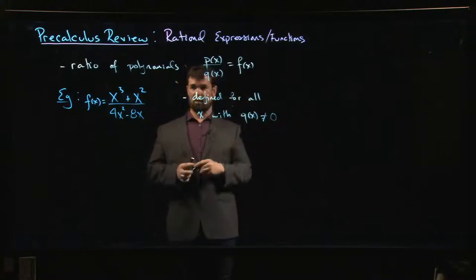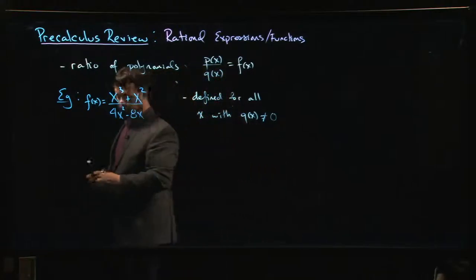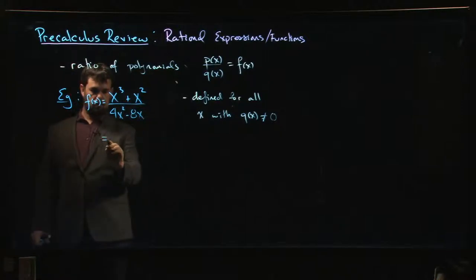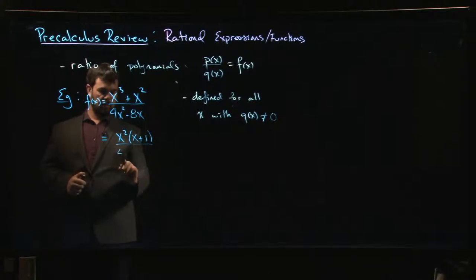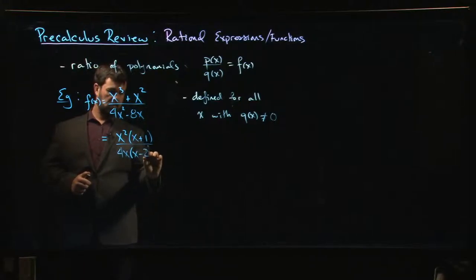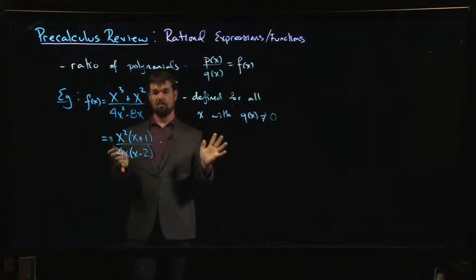If we want to know where this thing is defined, you've got to factor it. Up top, we notice X squared is common to both, so I can take out X squared, leaving X plus 1. On the bottom there's a 4 that's common and X, so 4X times X minus 2. There's our fully factored version of this rational function.